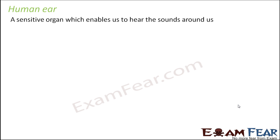So what is the human ear? It is a sensitive organ which enables us to hear the sounds around us. How do we know that there are sounds present around us? Sound and light are both types of energy — they basically exist as waves in the atmosphere. So when we say the ear is able to hear sounds, it is able to recognize the sound waves present in our surroundings.